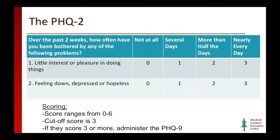The PHQ-2 has just two items. Over the past two weeks, how often have you felt bothered by: little interest or pleasure in doing things? The patient can respond: not at all, several days, more than half the days, or nearly every day, with scores from zero to three. The second item is: over the past two weeks, how often have you been bothered by feeling down, depressed, or hopeless? If the patient scores a three or more, they should be referred for further evaluation.